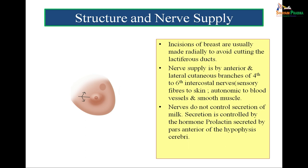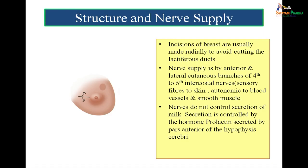Regarding incisions of the breast, incisions are usually made radially because we want to avoid cutting the lactiferous ducts. The nerve supply of the breast is by the anterior and lateral cutaneous branches of the fourth to sixth intercostal nerves, which are responsible for sensory sensations from the breast. But milk secretion is not controlled by these nerves — milk secretion is controlled by the hormone prolactin, secreted by the anterior pituitary.